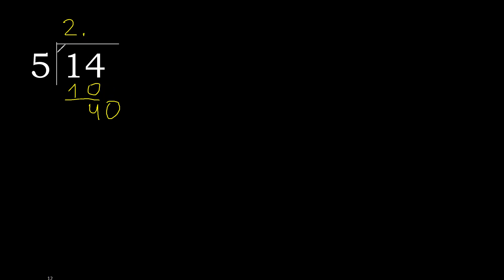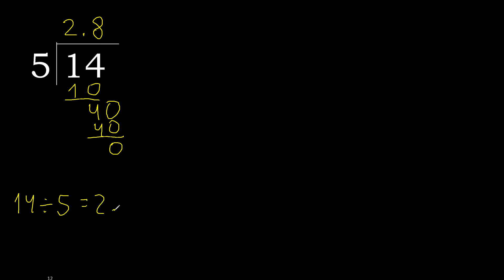40. 5 multiplied by 8 is 40. 40 minus 40 is 0. 0, therefore finish it. Therefore 14 divided by 5 is — finish it.